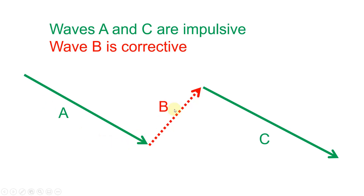Within this corrective wave pattern you also have waves which are impulsive and waves which are corrective. Waves A and C are impulsive — they drive the corrective move — and wave B is corrective, correcting the preceding wave A.